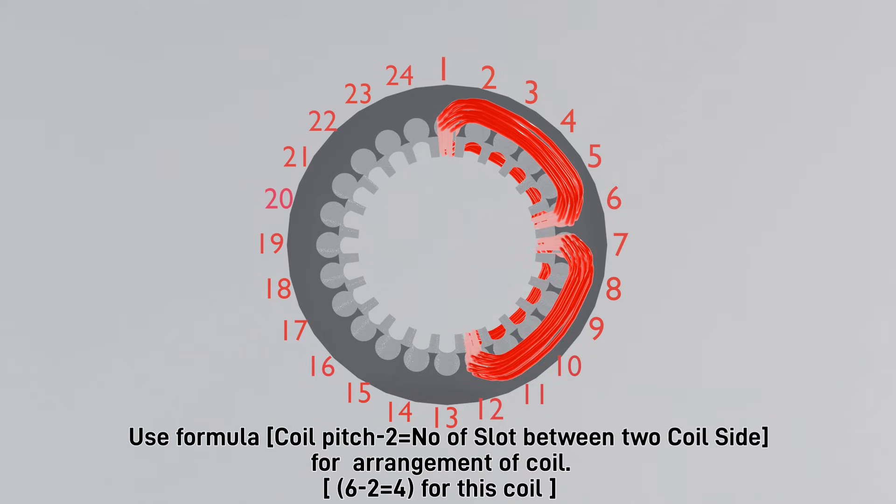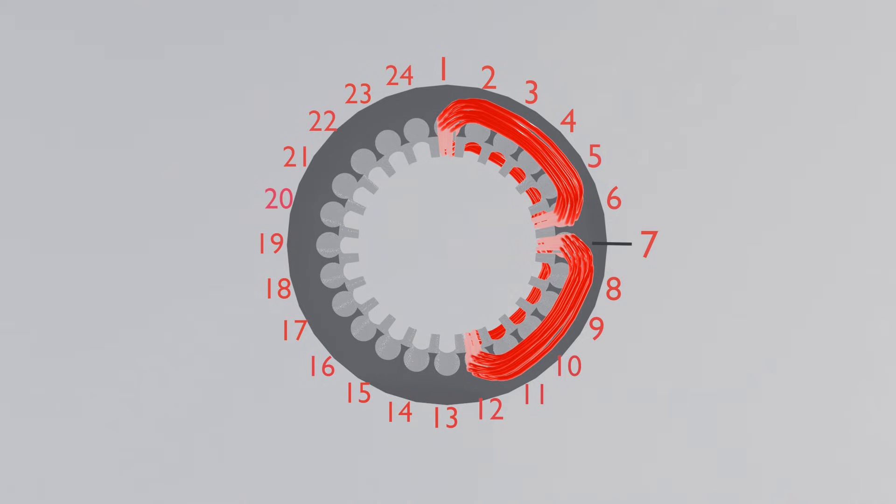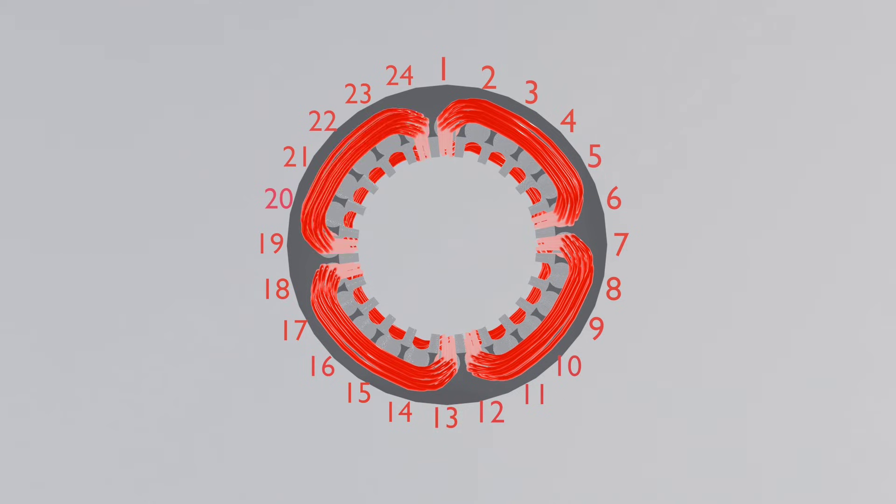The second coil of R phase is between slot 7 and slot 12. The third coil is between slot 13 and slot 18. And the last fourth coil of R phase is between slot 19 and slot 24.